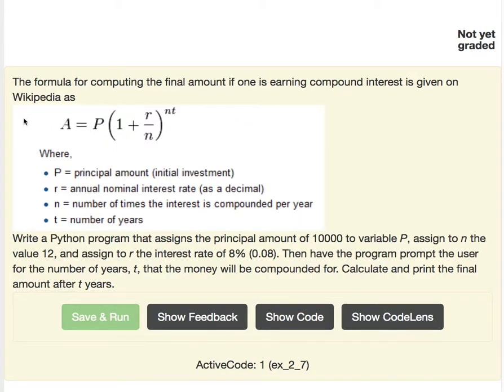So this problem here asks you to calculate the compound interest, and the amount that you have is equal to P, which is the principal amount, the initial investment.